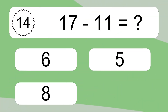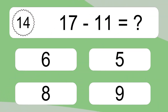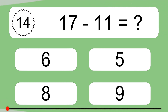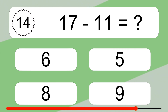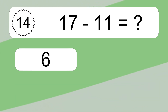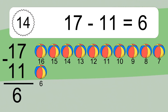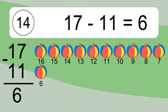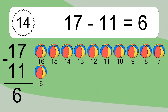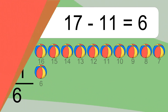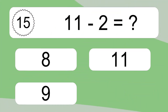17 minus 11 equals what? 17 minus 11 equals 6. Let's count it: 16, 15, 14, 13, 12, 11, 10, 9, 8, 7, 6.